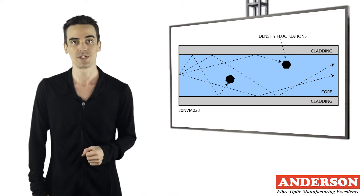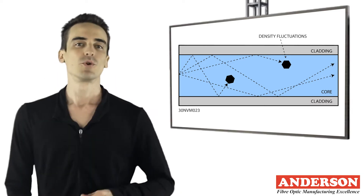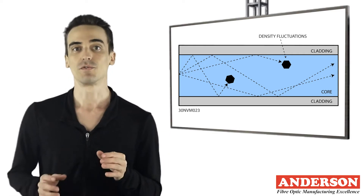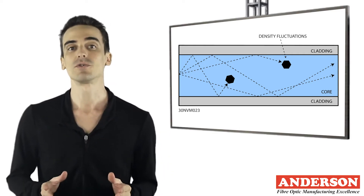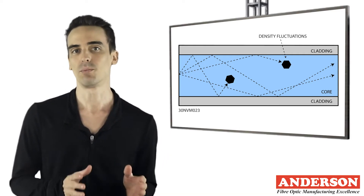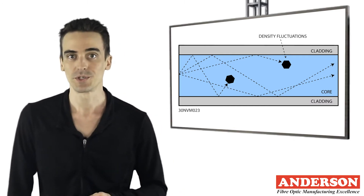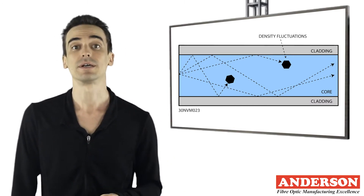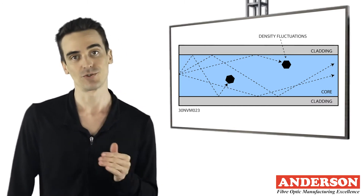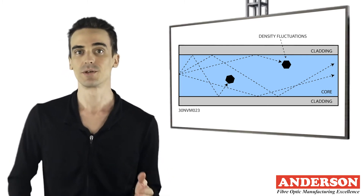Absorption is that portion of attenuation in optical fiber resulting from the conversion of optical power to heat. There are two types of absorption: intrinsic absorption and extrinsic absorption.